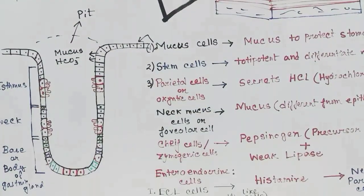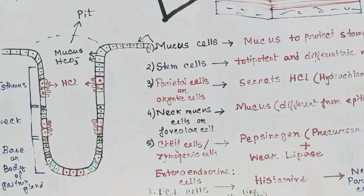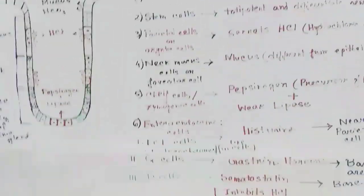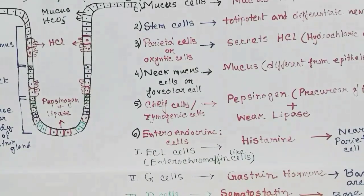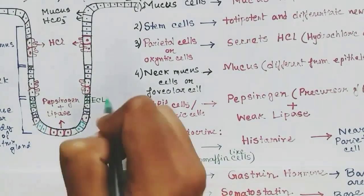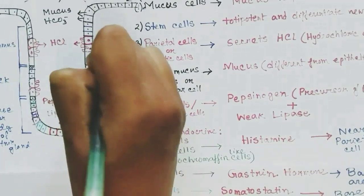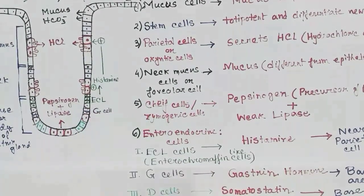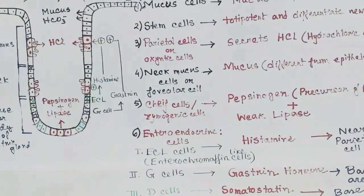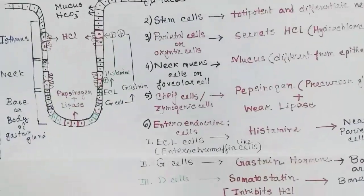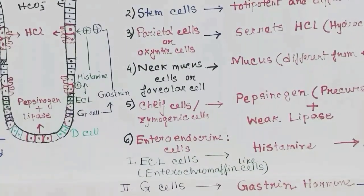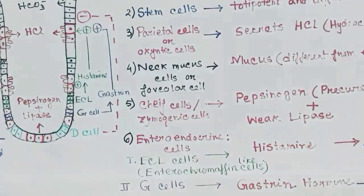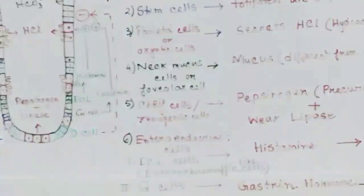When we eat food: the mucus layer releases mucus and bicarbonate; parietal cells release HCl; chief cells release pepsinogen and lipase. Among the enteroendocrine cells, ECL cells release histamine which stimulates parietal cells to release HCl; G cells release gastrin hormone which also stimulates parietal cells to release HCl; and D cells release somatostatin hormone which inhibits parietal cells from releasing HCl.